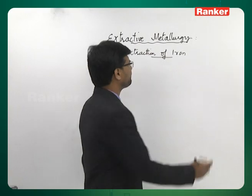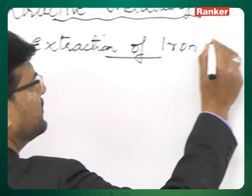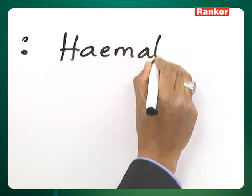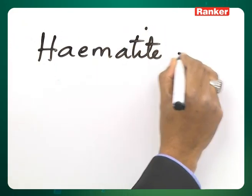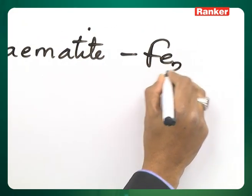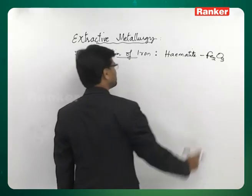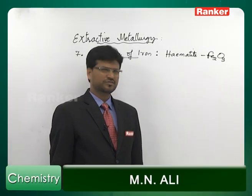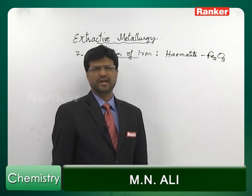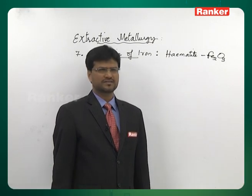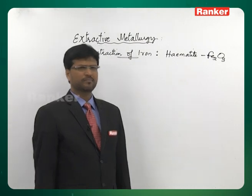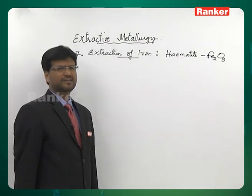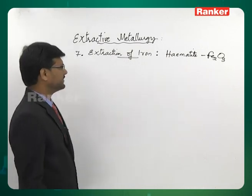Extraction of Iron. The chief ore of iron is Hematite, which is chemically Fe2O3. Its chemical composition is Fe2O3, and it contains FeO as an impurity, as well as SiO2. Let's see how Fe is extracted from Hematite.